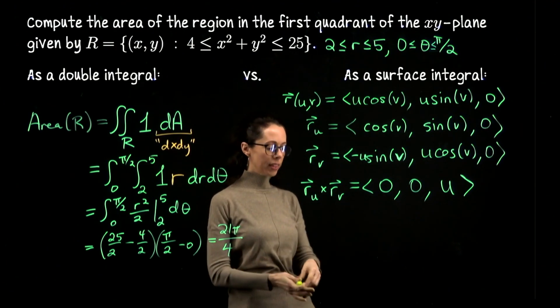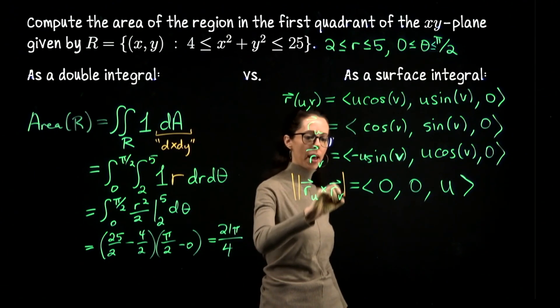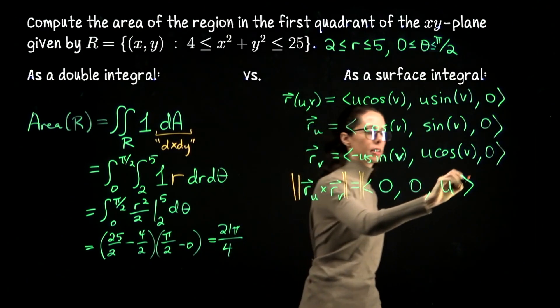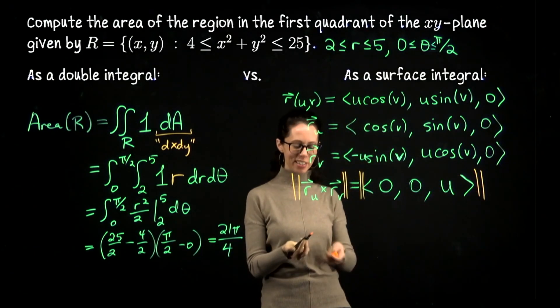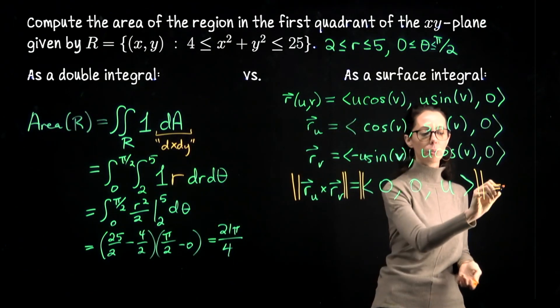We need the length of this for a scalar surface integral. So I'm going to take the magnitude of this cross product. As we just mentioned, u is positive, so overall the magnitude of this is the absolute value of u, which is u.